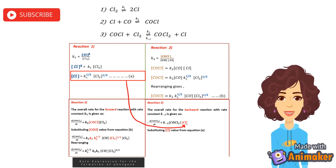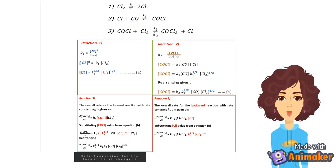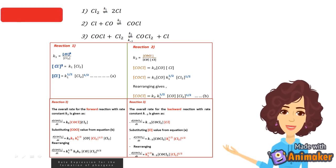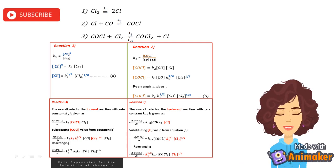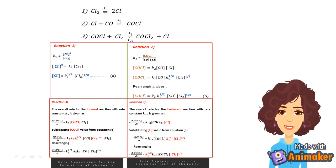Now substituting the value of Cl from equation A, we get minus d[COCl2]/dt equals K-3 times concentration of COCl2 times K1 raised to half times concentration of Cl2 raised to half. Rearranging, we get minus d[COCl2]/dt equals K1 raised to half times K-3 times concentration of COCl2 times concentration of Cl2 raised to half. This equation is the rate expression for the decomposition of phosgene.